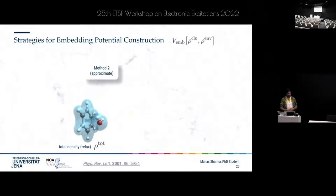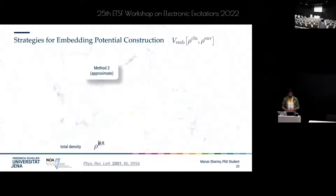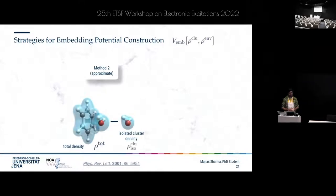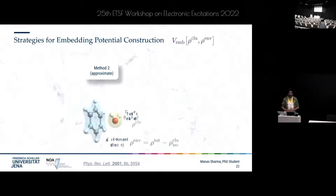In Method 2, we relax the density of the total system using a lower-level method like LDA or GGA DFT, then subtract the isolated cluster density from this total density and use this remainder as an approximation for the environment density. We then plug this back into the embedding potential and relax the cluster density in its presence. Just like Method 1, this is also approximate due to the kinetic energy density functionals.